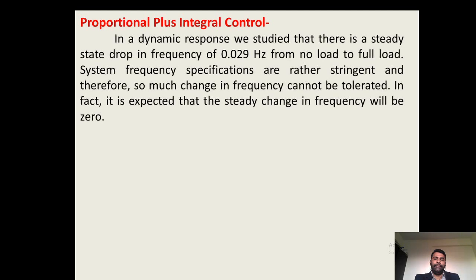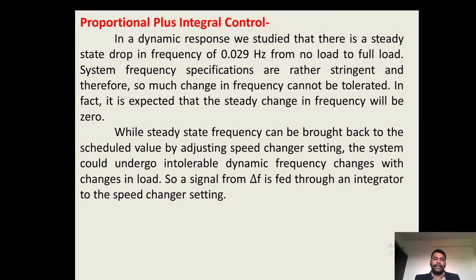We will start with proportional plus integral control. In a dynamic response, we have studied that there is a steady state drop in frequency of 0.09 hertz from no load to full load. The system frequency specifications are rather stringent, and therefore so much change in frequency cannot be tolerated. In fact, it is expected that the steady state change in frequency will be 0. This steady state change in frequency can be brought back to the schedule value by adjusting the speed changer setting.